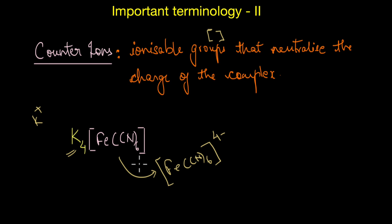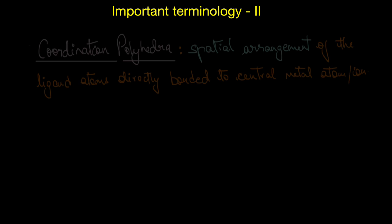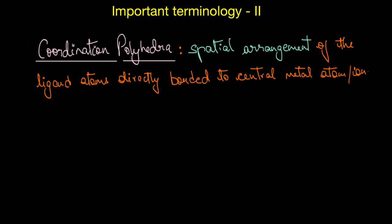It is fairly easy to identify counter ions because they are always present outside the square brackets. When you dissolve this complex in water, the counter ions — in this case the potassium ions — will be ionized. So what you have is essentially [Fe(CN)₆]⁴⁻ as the non-ionizable group and four K⁺ ions.